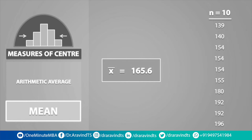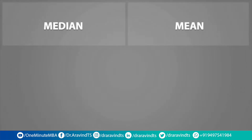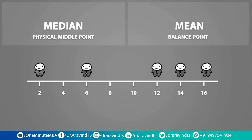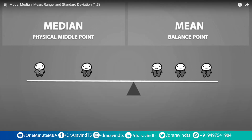Let's quickly compare between the median and the mean. Both are measures of center, but they measure center in a different way. The median refers to the physical middle point — so for this data set, the median would be equal to 12. The mean can be thought of as the balance point. If you calculate the mean for this data set, you would get a value of 10. If these people were of equal weights, this is the position in which a seesaw would be balanced.